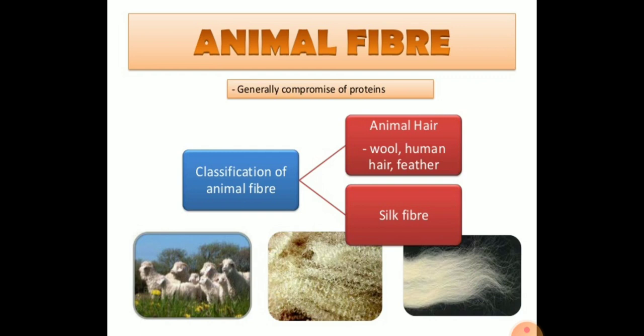Animal fibers are natural fibers that are principally comprised of specific proteins such as silk, hair, fur and feathers. All animal fibers may not have the same properties — even within the same species the fiber properties may be different.